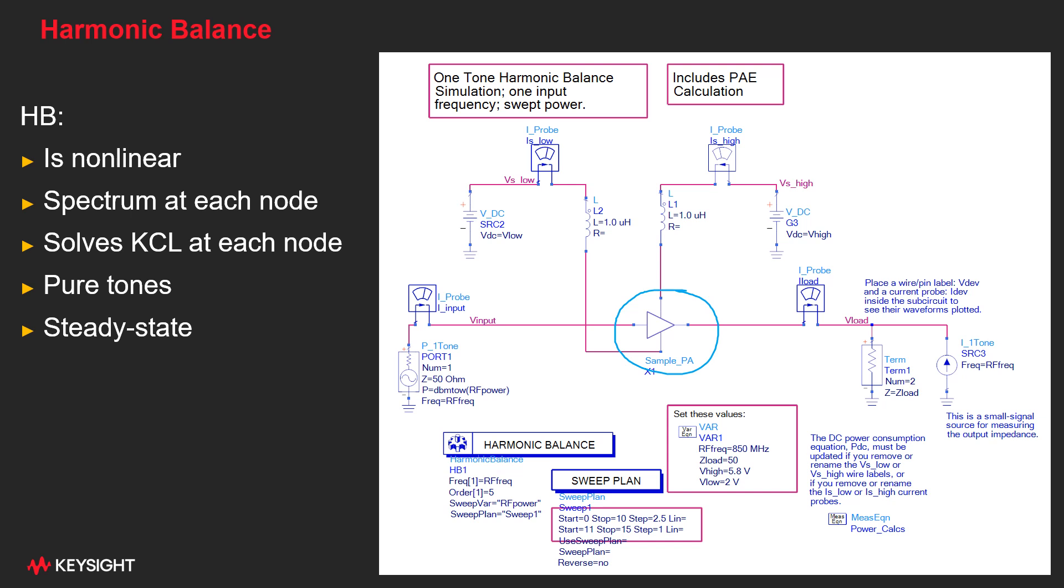So harmonic balance is a non-linear analysis. It gives us the spectrum at each node by solving KCL at each node. And you control how many harmonics are analyzed with this order parameter in the harmonic balance controller here at the lower left. It's for pure tones only, so our source is a pure CW tone.